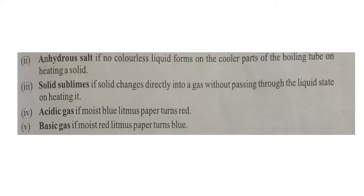You will also test for gases using wet litmus paper — blue or red — at the mouth of the test tube. If the blue litmus paper changes to red, the gas is acidic; the inference is 'acidic gas present' or 'H⁺ ions present.' If the gas changes red litmus paper to blue, the gas is basic; write 'basic gas present' or 'ammonium ion present.'